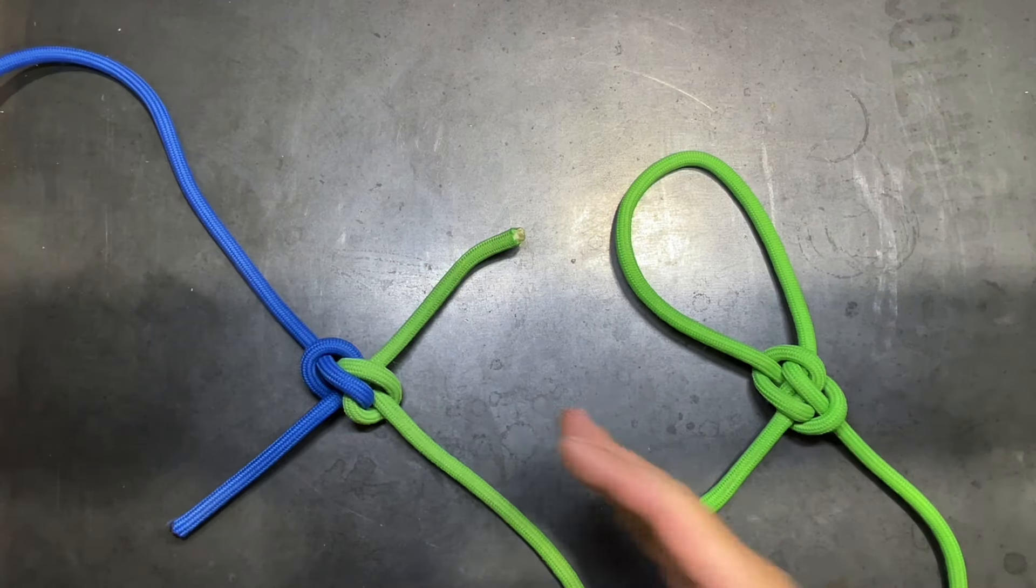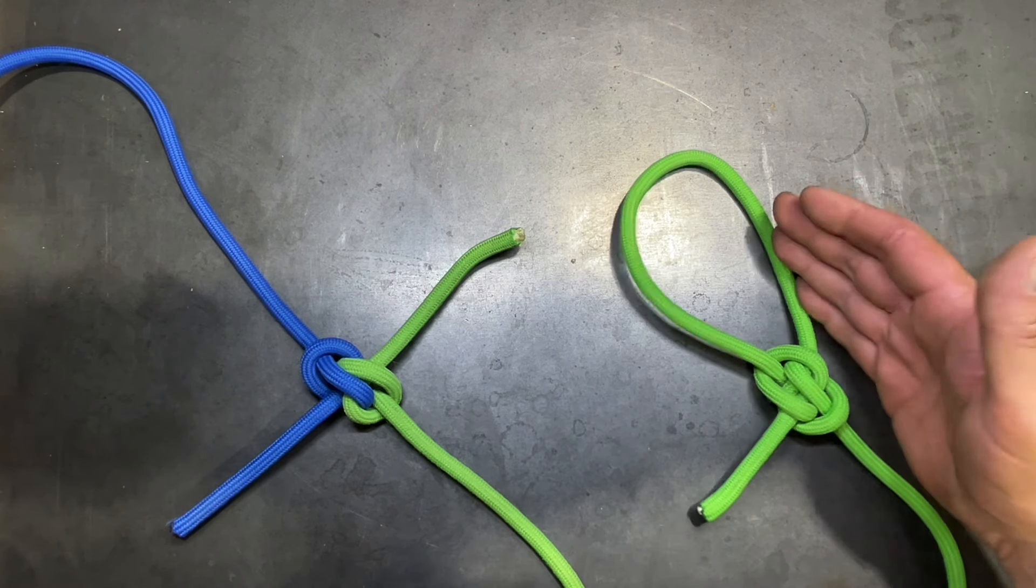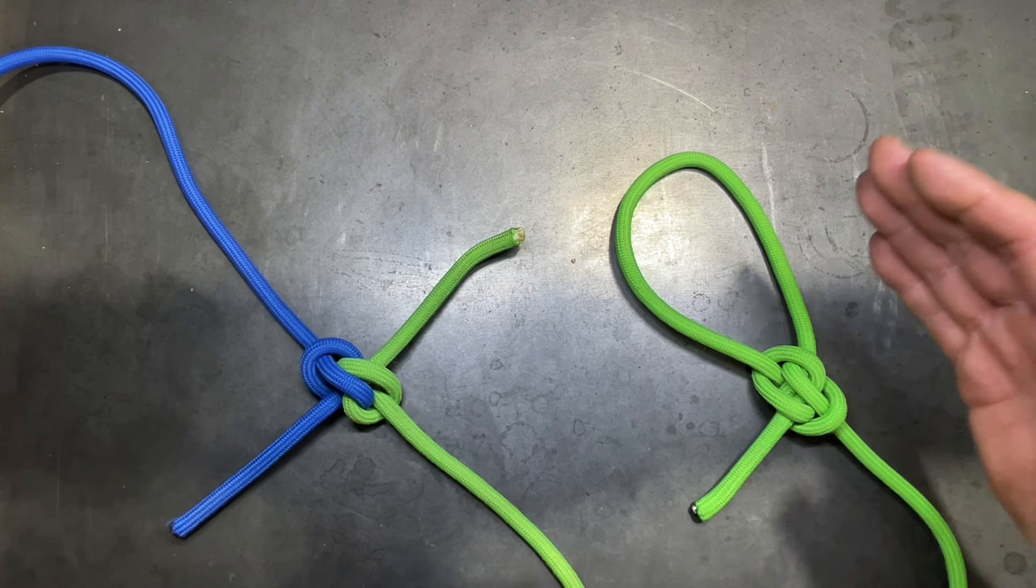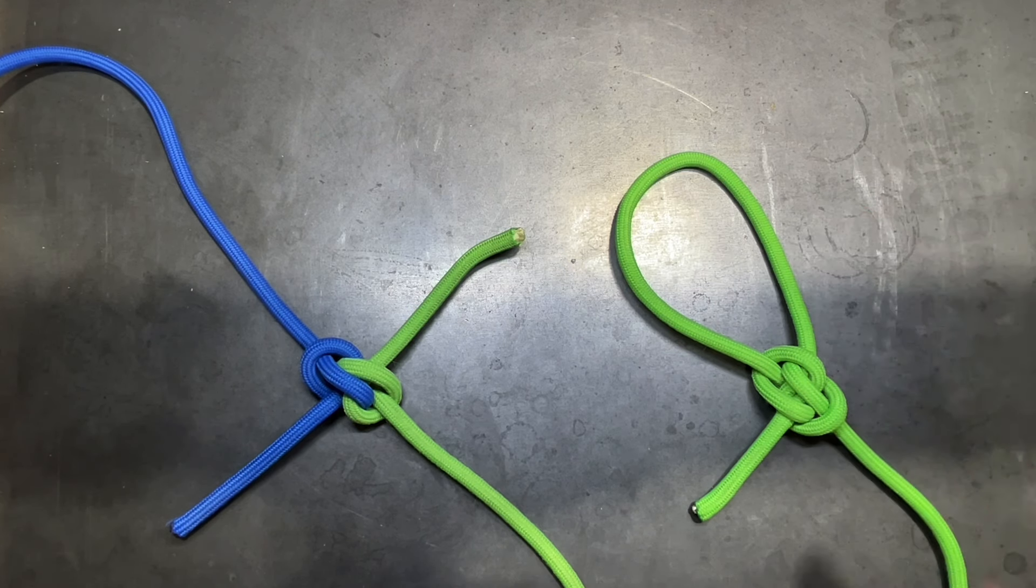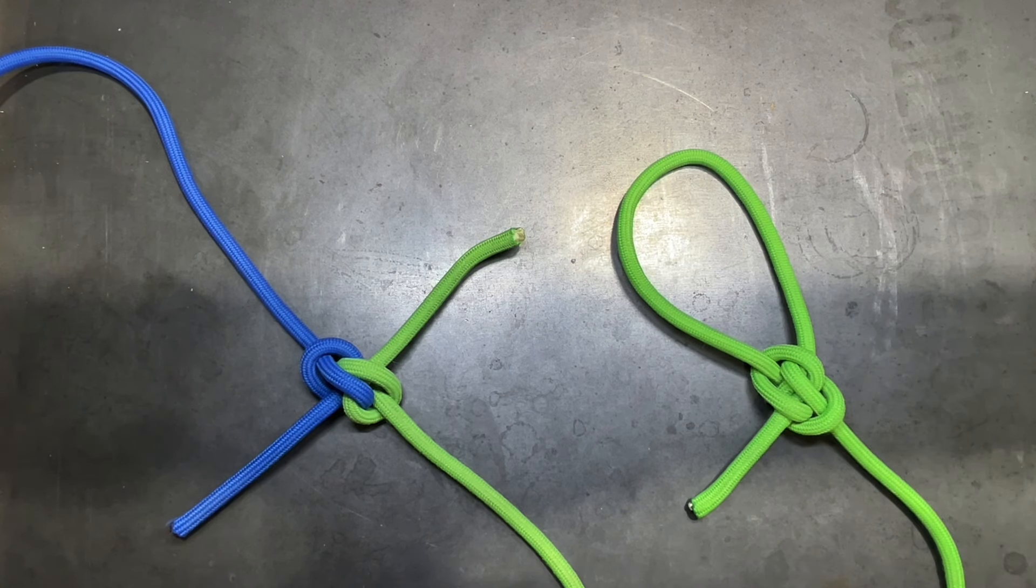Now these two knots are not the end-all be-all. There are other knots in other situations that will work better for fixed loop knots and for bend knots. But if you're looking just for a straight loop knot that will be able to attach to an object, regardless of how much pull you put on it and then be able to get it undone, the Zeppelin loop is hard to beat.